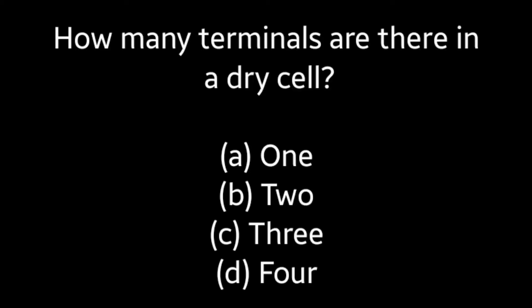Next question: How many terminals are there in a dry cell? (A) 1, (B) 2, (C) 3, (D) 4. Answer is Option B: 2.